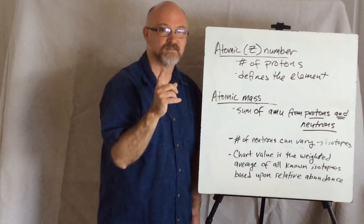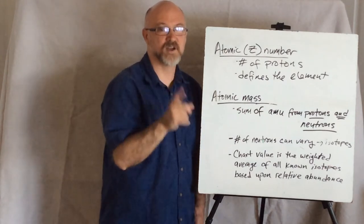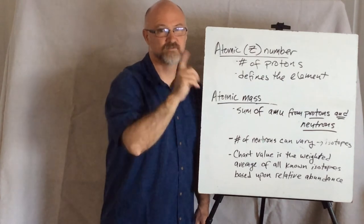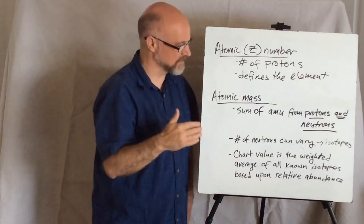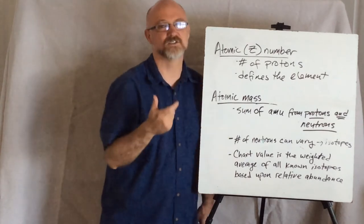Now, here's the thing. We can have different numbers of neutrons for samples of atoms of the same element. Different numbers of neutrons. So, we call those things isotopes.